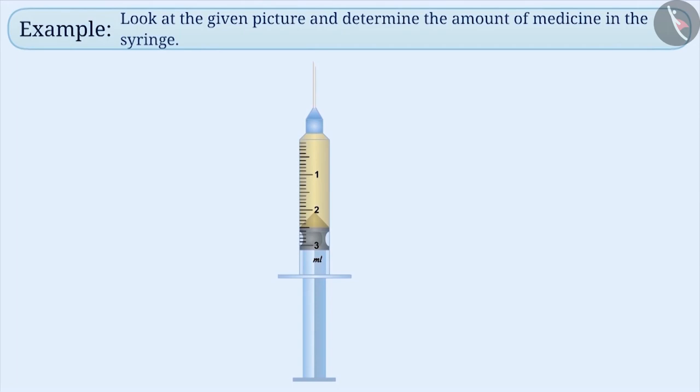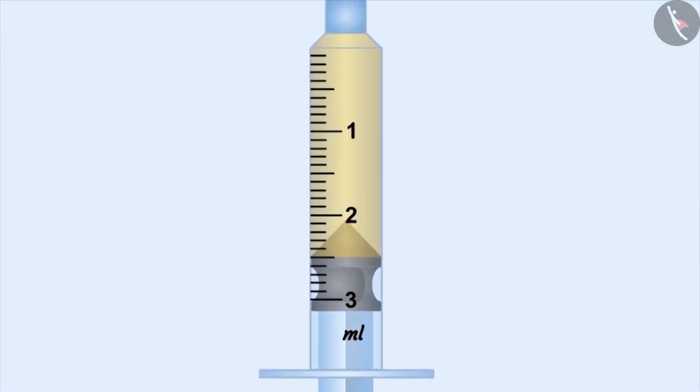By looking at the given picture, can you find out the amount of medicine in the syringe? As we can see here, the scale on the syringe is marked in milliliters. That means the quantity of medicine present till here can be said to be 1 milliliter.